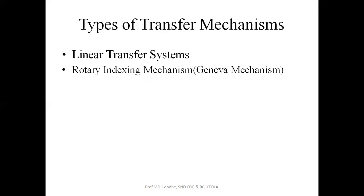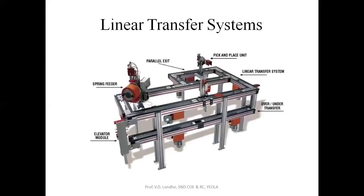Now we will see in detail the linear transfer system. This is the basic configuration of the linear transfer system. Here you can see the spring feeder, then the elevator module, and the pick and place unit where parts can be added or the product taken out. This is the over and under transfer line — this portion is the over transfer line and this is the under transfer line.